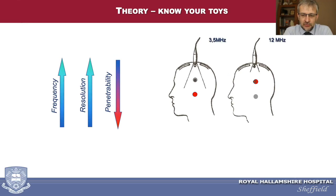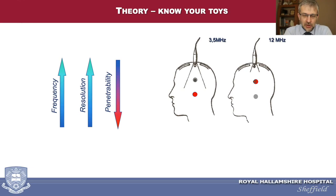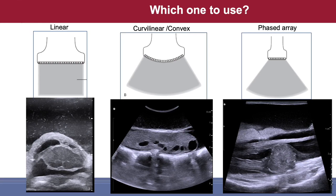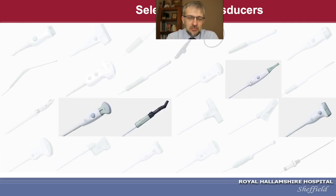An important relationship to remember is between transducer frequency and image quality versus depth. A high-frequency probe gives very good image quality but cannot see deep into the brain — it is useful mainly near the surface. A low-frequency probe can explore the whole head cavity but with lower image quality. My advice: explore and find the probe best for the specific case. Ideally you want a couple of probes you can change depending on needs.